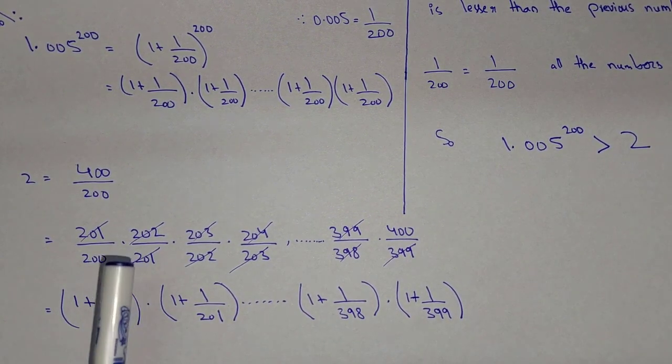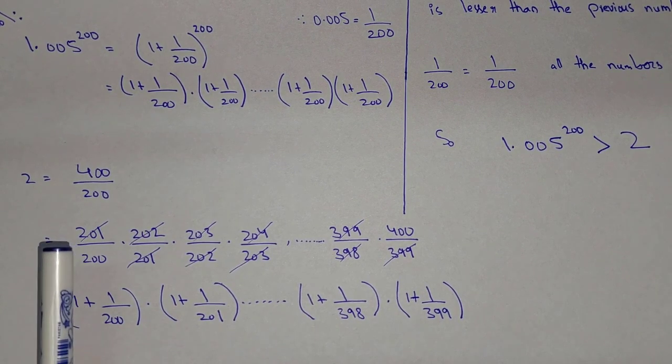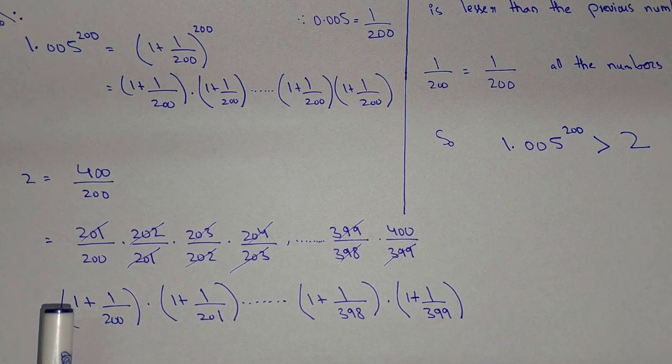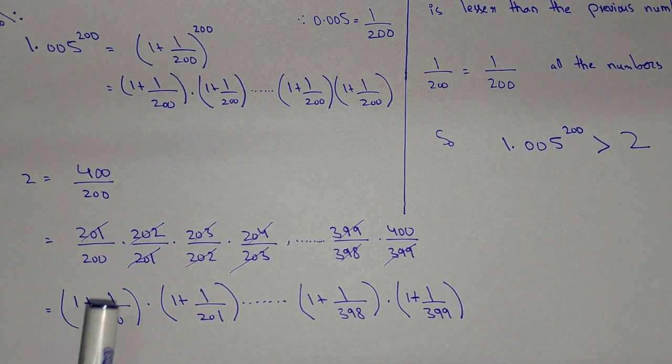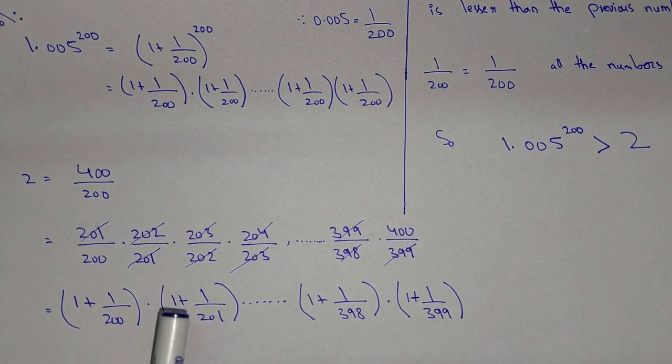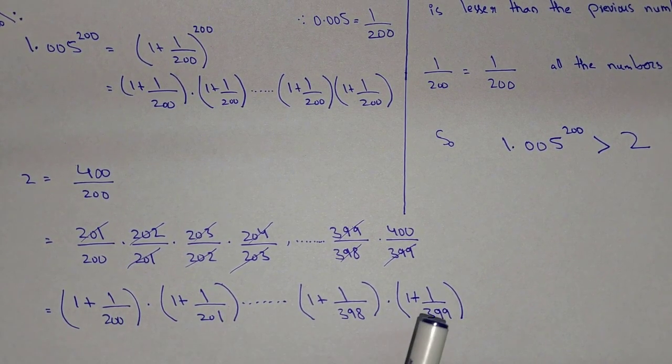Now look over here. We can write 201 over 200 as 1 plus 1 over 200, and in the same way we can write this one number as 1 plus 1 over 201, so up till the last number 1 plus 1 over 399.